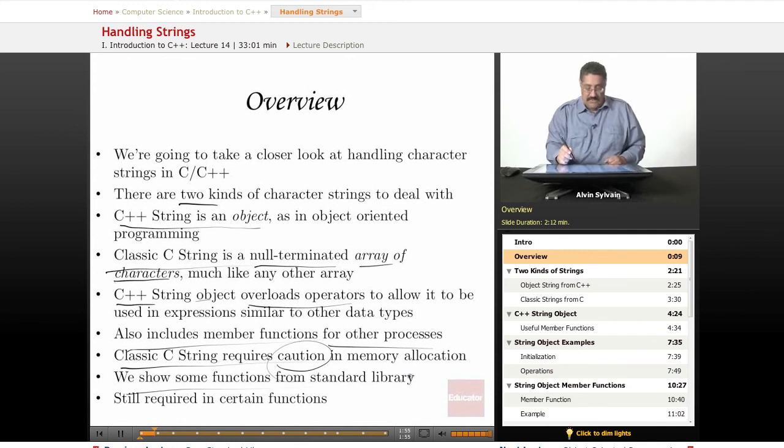So we're going to show some functions from the standard library and some methods that are in the library for the string object. And the classic C string, even though you might say, well, that's obsolete now, there are still some functions and methods that are in the C++ standard library that require a classic C string versus the new C++ object string.